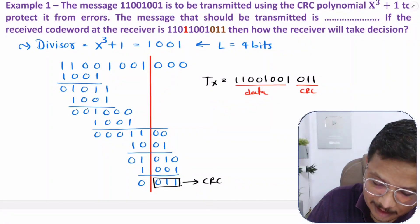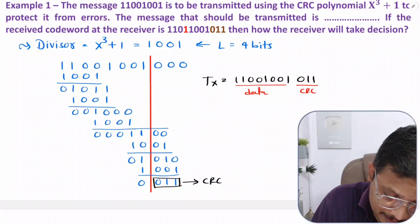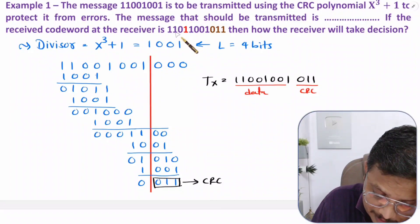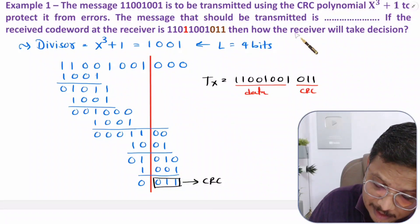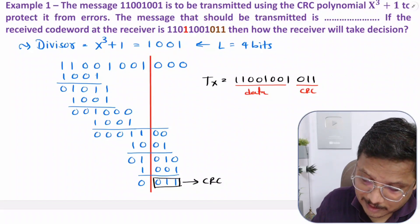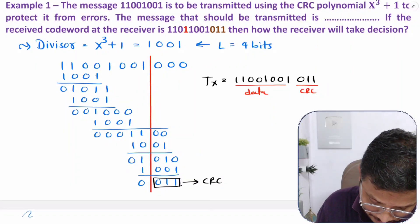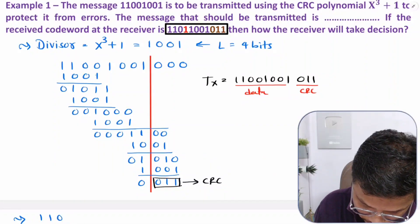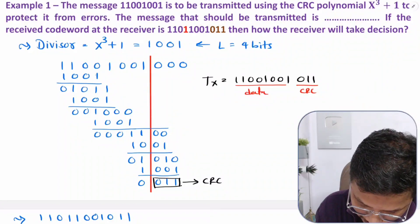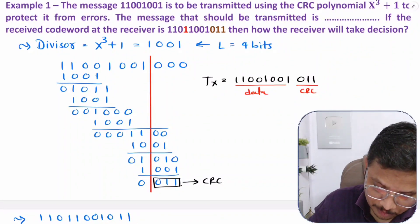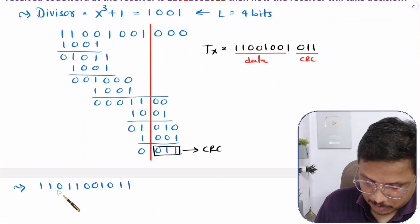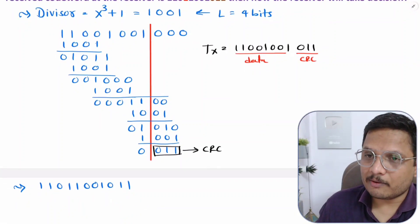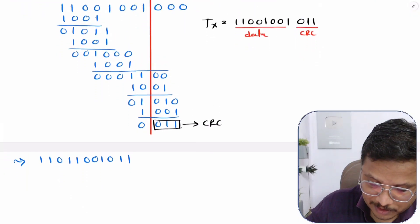Now the second part of the question: if the received code word at the receiver is 1 1 0 1 1 0 0 1 0 1 1, how will the receiver make a decision? We just need to analyze that received code word: 1 1 0 1 1 0 0 1 0 1 1. This is the received code word, and we need to determine whether it is corrupted or not.